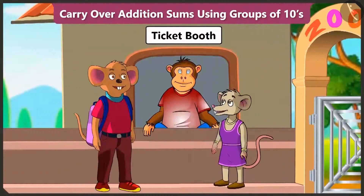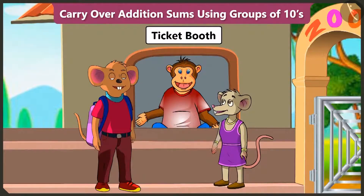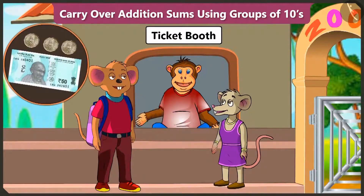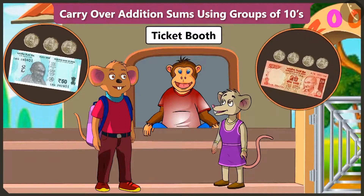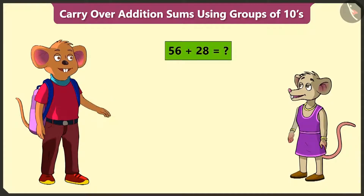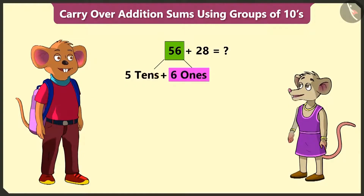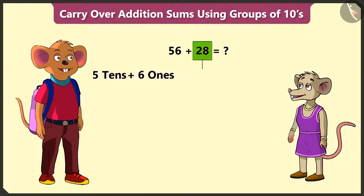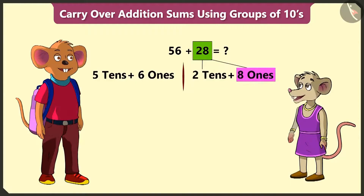Do we have to buy a ticket here also? Yes. Please give us 2 tickets. Your ticket will cost 56 rupees and the younger child's ticket will cost 28 rupees. Now tell me how much money do we have to pay in total? 56 is 5 tens and 6 ones, and 28 is 2 tens and 8 ones.